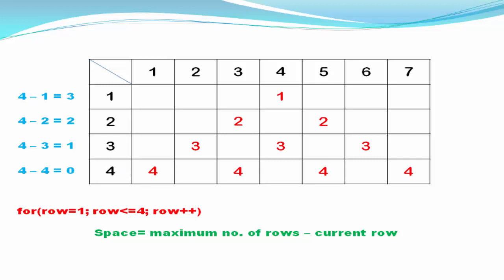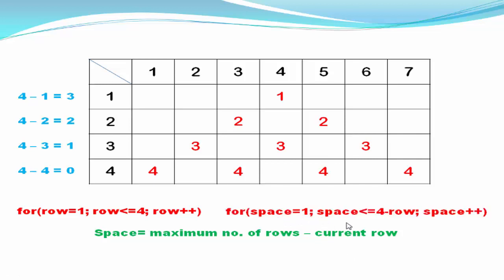So this is the logic to get how many spaces are printed in each row. We can write the loop as: for space equal to one, space less than or equal to n minus row, then space plus plus. Here n indicates the maximum row number and row indicates the current row number.